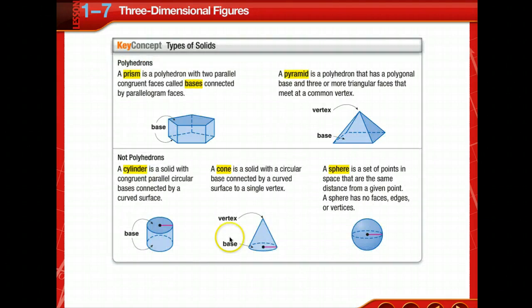Now we're going to talk about solids. A solid has all flat surfaces that enclose a single region of space called a polyhedron. Each flat surface is called a face. The line segments where the faces intersect are called edges. The point where three or more edges intersect is called a vertex. So here's edge one, edge two, and edge three. They connect at a vertex.